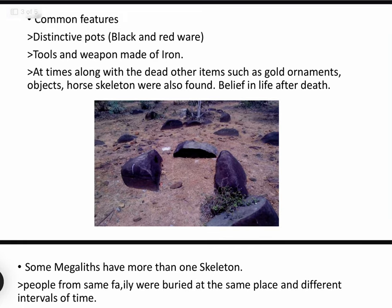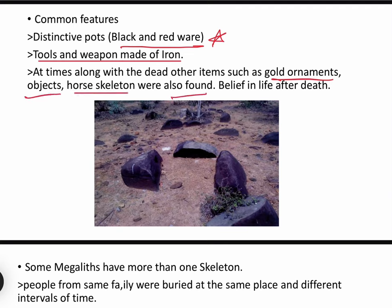Certain pottery items were buried along with the dead. This pottery is known as Black and Red Ware, or BRW — please note that for your NCERT. Since it was an iron-based society, some tools and weapons made of iron were also buried with the dead. At times, other items such as gold ornaments and horse skeletons were also found.